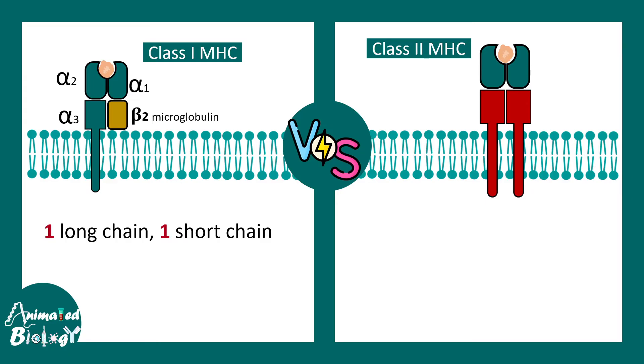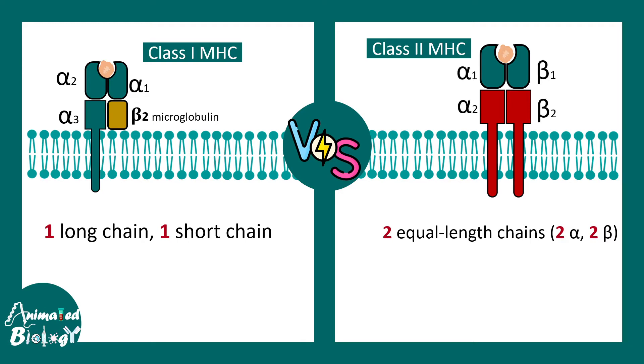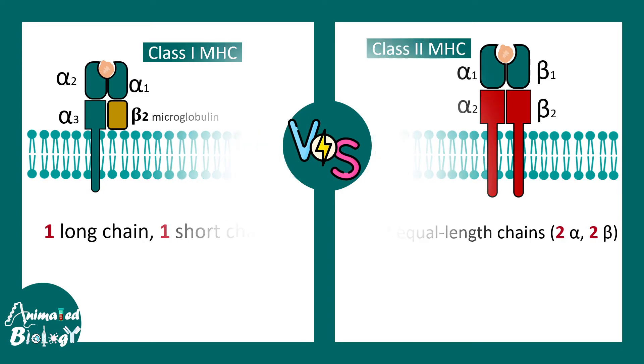The class 2 MHC molecule has two equal length chains — 2 alpha and 2 beta chains. So they are structurally pretty much different.